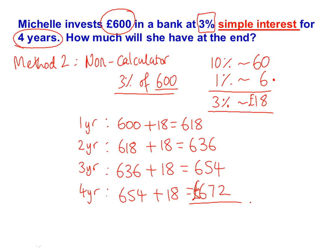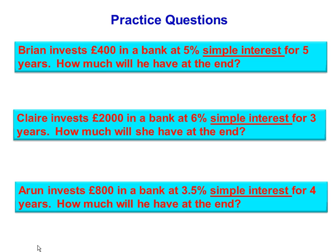This is how to do the question if you haven't got a calculator — you have to do the 10%, 1% method to get you started. Remember, we should only use this method when the question says simple interest, because usually the question is compound interest. Please make sure you've watched the compound interest video and done those questions as well. Here are some practice questions for you to have a go at — good luck and ask your teacher if you need help.